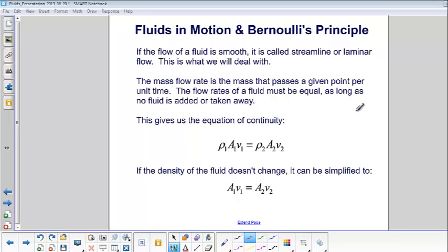If the flow of a fluid is smooth, it can be called streamlined flow. This is what we will deal with. The mass flow rate is the mass that passes a given point per unit time. The flow rates of a fluid must be equal as long as no fluid is added or taken away.